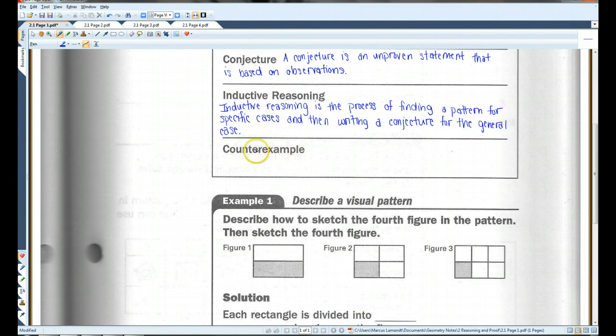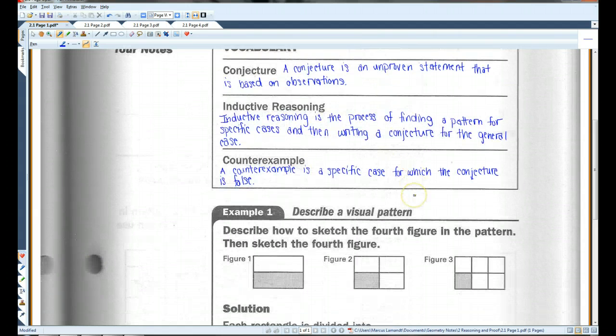A counterexample is a fact or a specific case that proves a conjecture wrong. So, if I made a statement and you gave me some specific example that proved my statement wrong, you gave me a counterexample.